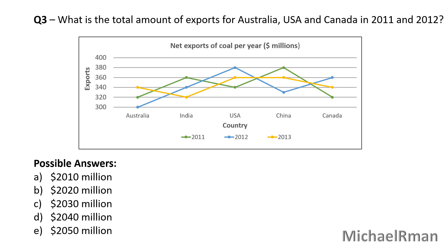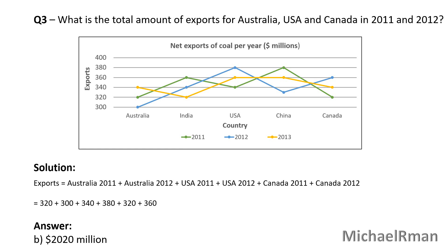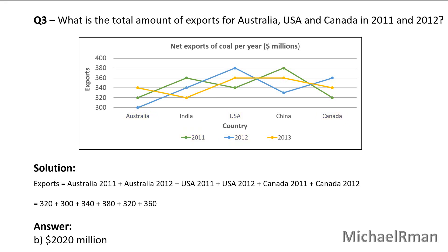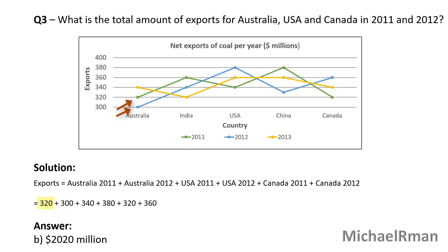Last question: What is the total amount of exports for Australia, USA and Canada in 2011 and 2012? Use the graph provided. Possible answers include: A – $2010 million, B – $2020 million, C – $2030 million, D – $2040 million, or E – $2050 million. The solution: Australia's exports in 2011 are $320 million, in 2012 are $300 million. USA's exports in 2011 are $340 million, in 2012 are $380 million. Canada's exports in 2011 are $320 million, in 2012 are $360 million. Adding these, the answer is B – $2020 million.